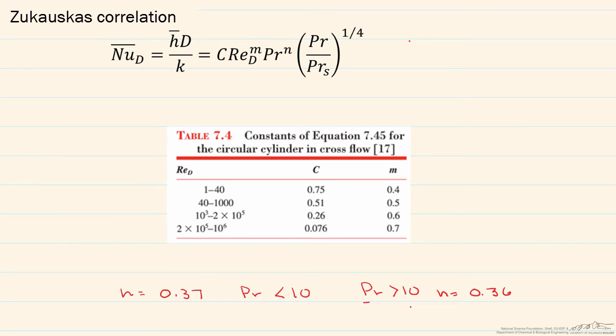You look up your C and your M, again, based on the Reynolds number in a table. The one other difference besides that N is this ratio of Prandtl numbers, where you're looking at the Prandtl at the bulk temperature divided by the Prandtl number at the surface of your cylinder.